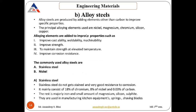Next comes alloy steel. Alloy steels are produced by adding different elements other than carbon to improve properties required for the application. The principal elements added are nickel, magnesium, chromium, silicon and copper. Alloying elements are added to improve castability, weldability, machinability, strength, and to maintain strength at elevated temperatures.